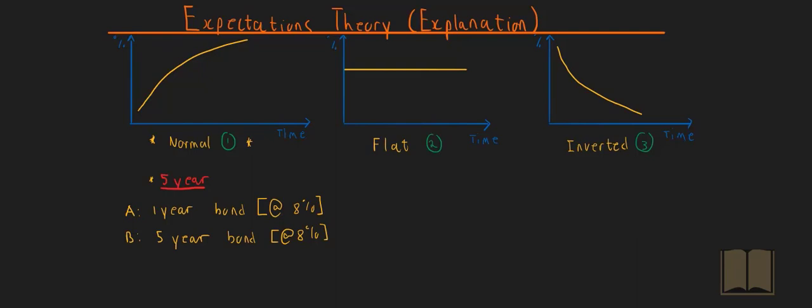Now let's see how the expectation theory works. If investors expect that yields or returns or interest rates will increase in the future, they wouldn't want to be locked into a five-year bond which has an interest rate that stays the same at eight percent. They would rather choose a one-year bond so that when interest rates increase, they can purchase one-year bonds again to take advantage of the increase in the interest rates.